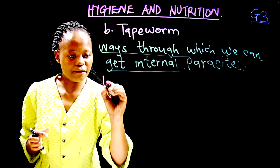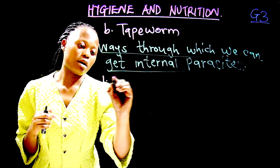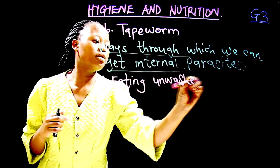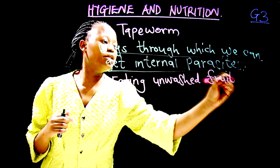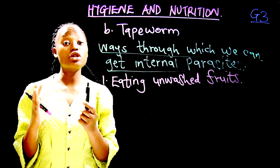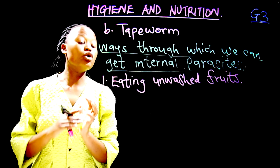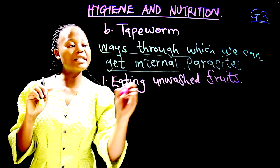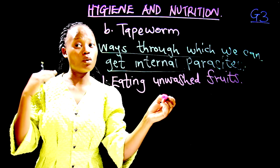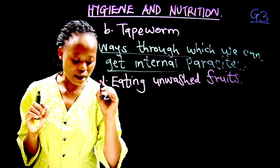Number one: eating unwashed fruits. When we eat unwashed fruits, we are likely going to be infested by internal parasites, for example roundworms. So that is the first way in which we can get internal parasites.